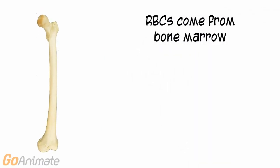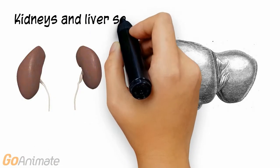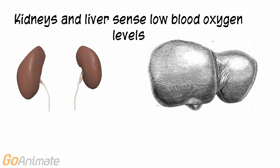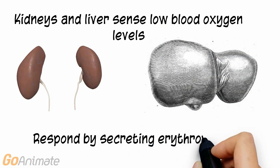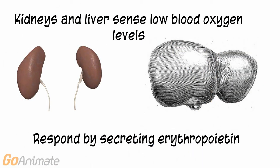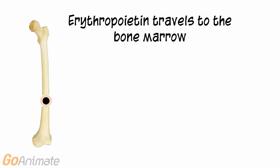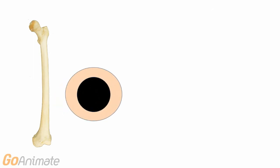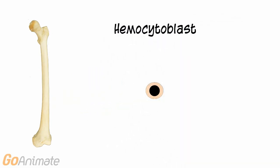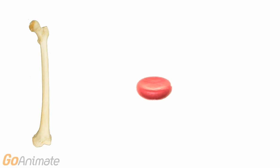Red blood cells form in the bone marrow. The kidneys and liver detect low oxygen levels and secrete a hormone called erythropoietin, which travels through the blood to the bone marrow. Erythropoietin promotes differentiation of a stem cell called the hemocytoblast into a mature red blood cell, or erythrocyte.